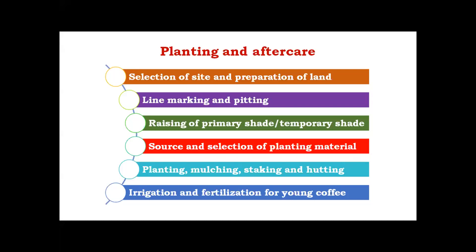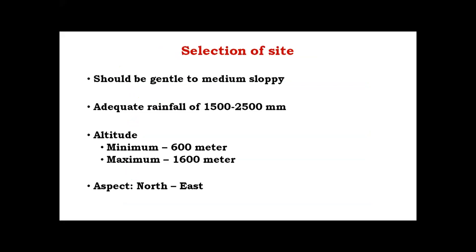Next is the raising of primary shade or temporary shade for giving immediate shade to coffee plants, since they are highly sensitive to temperature. Then comes the source and selection of planting materials — what kind of planting material to select and from where. After that: planting, mulching, staking and cutting. Finally, irrigation and fertilizers to maintain the coffee field and stabilize yield. We start with the selection of site.